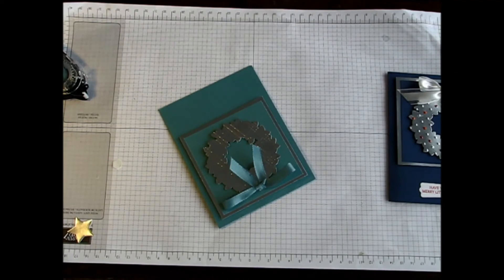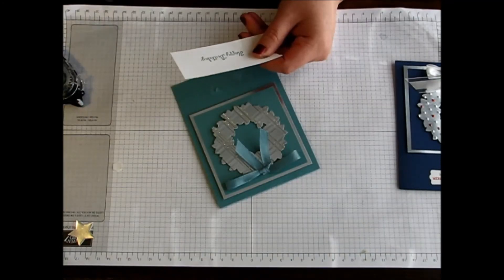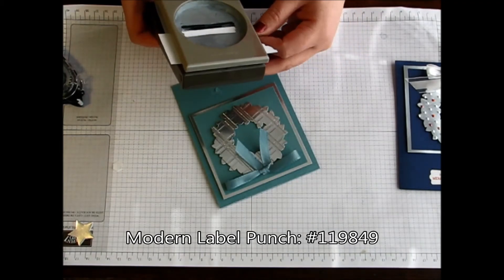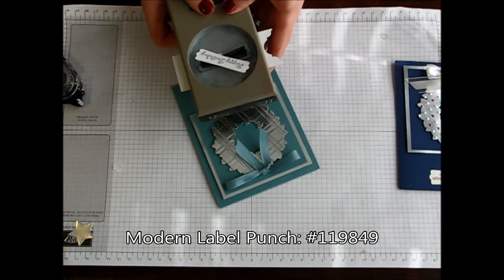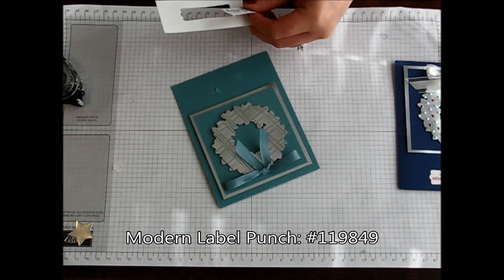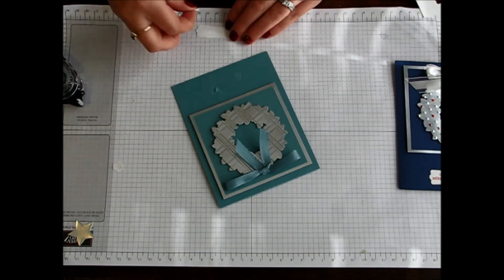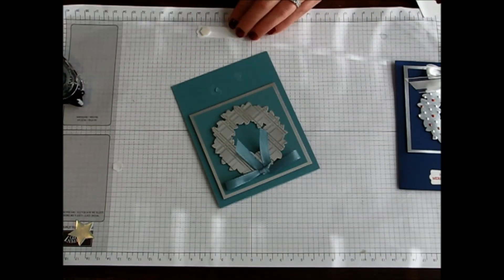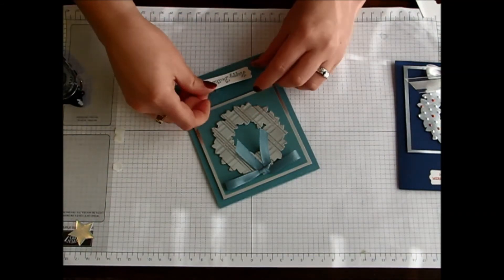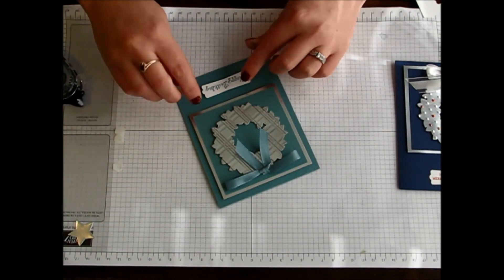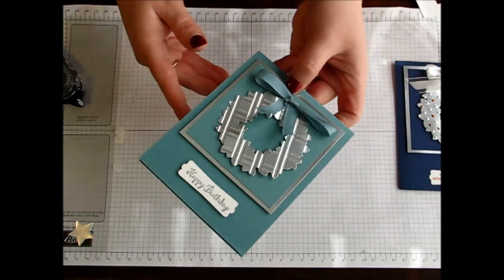So this would be perfect for her as well. So then I am just going to take my modern label punch and line that up perfectly in there. Punch that out. And of course I can't just have this flat on my card. So I am just going to add a few of my dimensionals and pull off the backs of that. And line that up perfectly there on the center of the card.